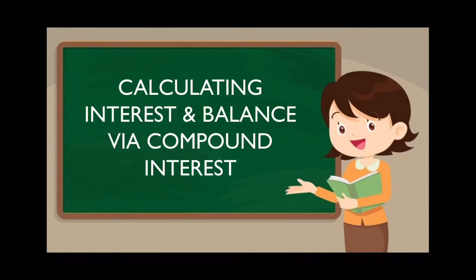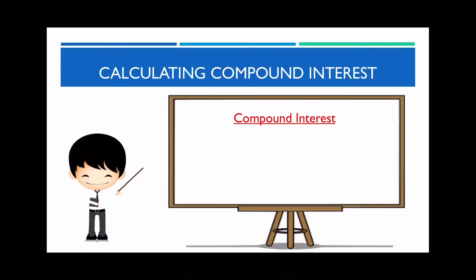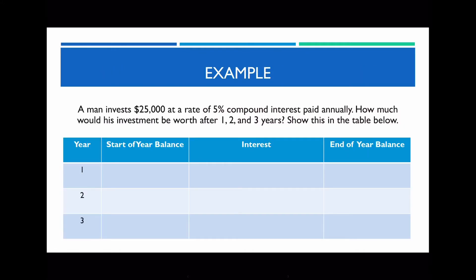Next, let's look at how we actually calculate the interest and balance via compound interest. There are two ways to do this: we can calculate from first principles using a table format, or we can use the shortcut formula that you've already been exposed to in your Maths A course. I want to show you how to model and set out your working when calculating the balance and interest earned through a table format.